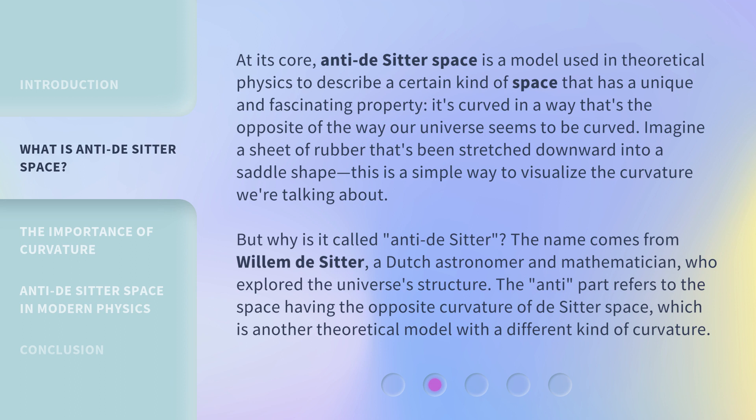But why is it called Anti-de Sitter? The name comes from Willem de Sitter, a Dutch astronomer and mathematician who explored the universe's structure. The 'Anti' part refers to the space having the opposite curvature of de Sitter space, which is another theoretical model with a different kind of curvature.